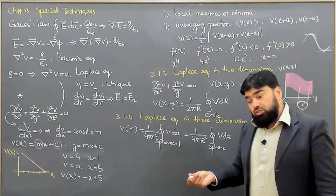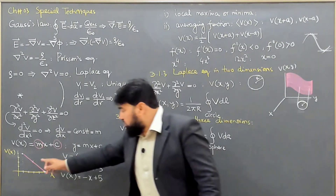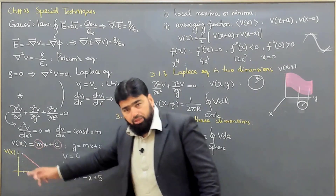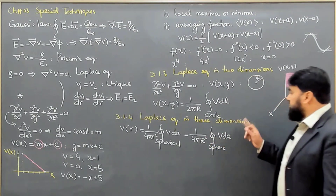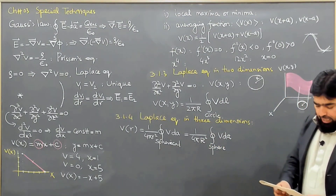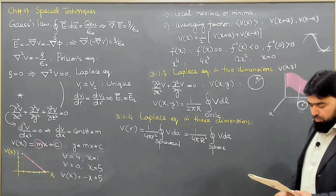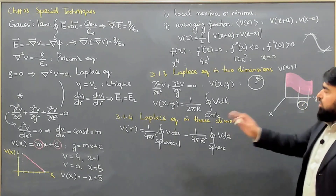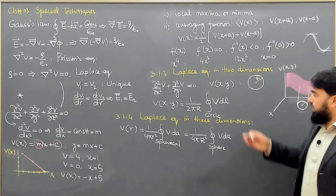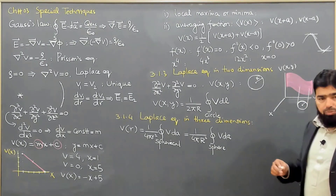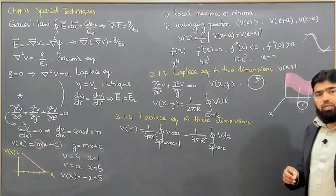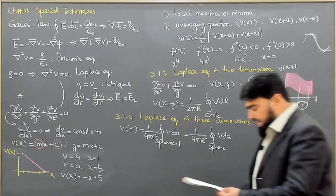That means, just like the central point was shifting here and there, the same situation will occur with the sphere as well. We will prove this now. In the two-dimensional case we did not have a direct proof, but here in the three-dimensional case we can easily prove this.